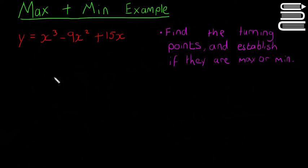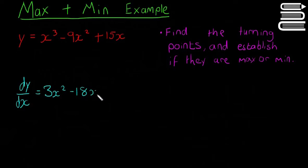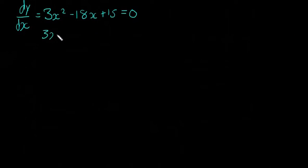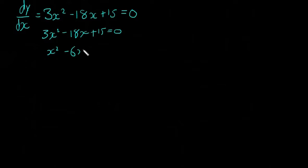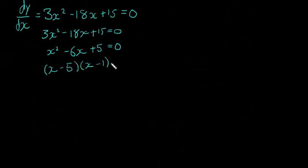To find the turning points, remember we find where dy/dx is equal to zero. So dy/dx is going to be equal to 3x squared minus 18x plus 15, and we let that equal to zero. So 3x squared minus 18x plus 15 equals zero. Dividing everything by 3 gives x squared minus 6x plus 5 equals zero. Factorizing, that's x minus 5 and x minus 1 equals zero, so x equals 5 or x equals 1.